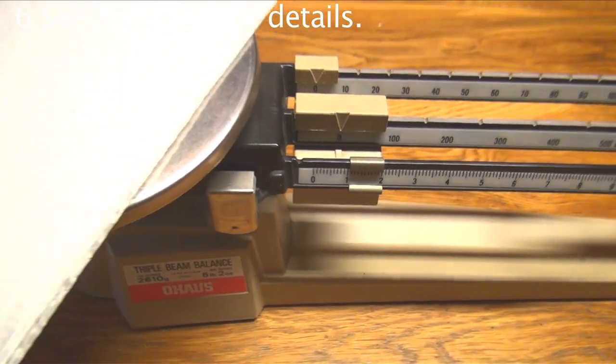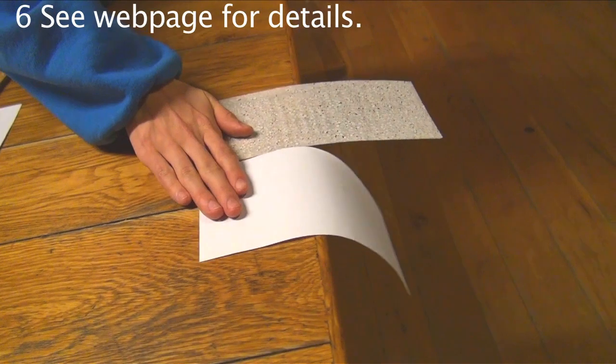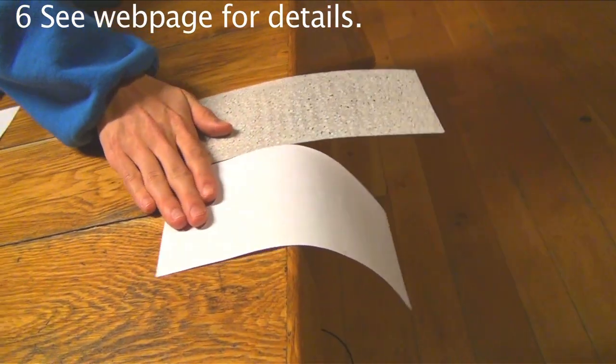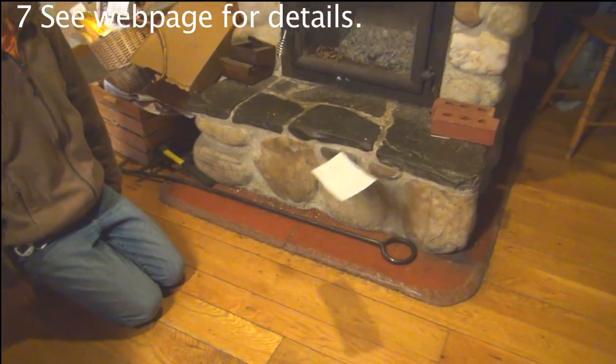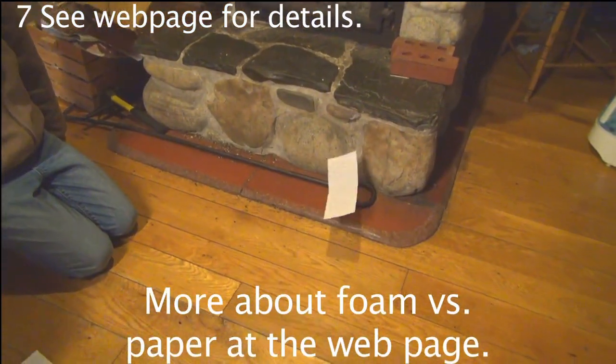Printer paper is 8 times heavier and still not stiff enough to keep from bending too much. You can also see it by dropping a piece of paper and a piece of foam side by side.